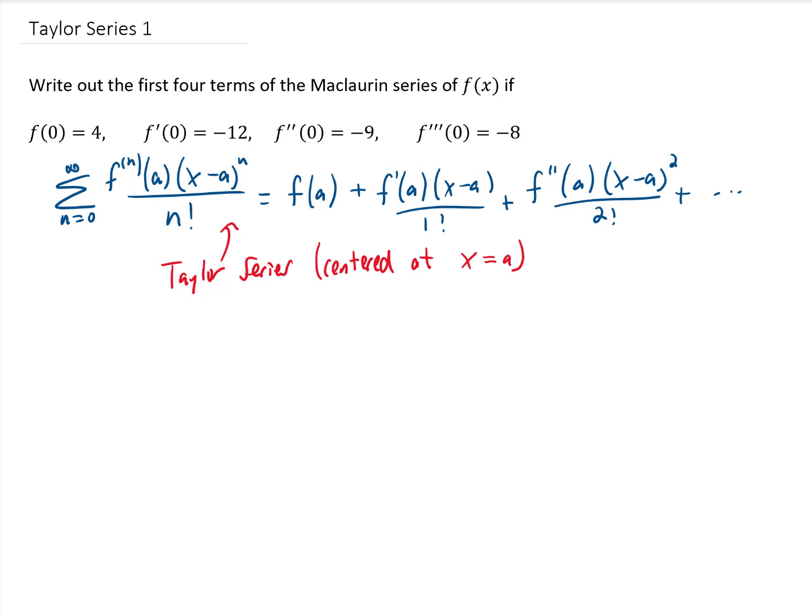Now this is a general Taylor series, and this expansion is centered at an x value, x equals a. If we want a Maclaurin series, that just means that we're going to use a equals 0 for this Taylor series. So let me write out a few terms of that.